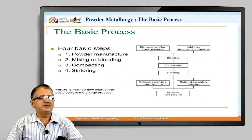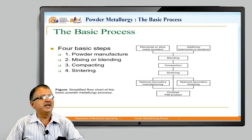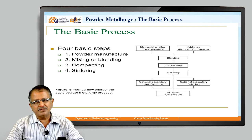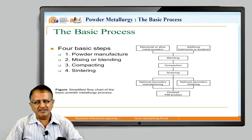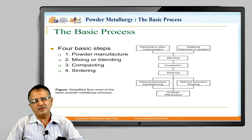Coming to the basic steps: first, the metal powder is prepared. Then some additives — lubricants and binders — are added to make that powder fit for the particular purpose, giving the desired powder properties. Then it is blended, compacted in a press, and heated to a desired level of temperature in a process called sintering. If necessary, optional secondary manufacturing and finishing operations are carried out, and then the final product is ready for use — no further processing is required. The four basic steps are: powder manufacture, mixing or blending, compacting, and sintering.